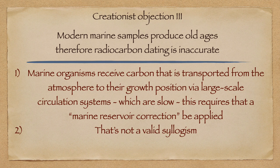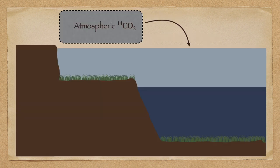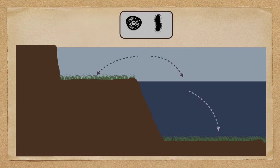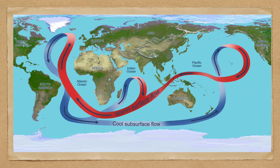The third young Earth creationist objection is that if you take a modern marine organism and date it, it will often produce a spectacularly old age under radiocarbon dating. This is actually a well-known and well-understood phenomenon. For carbon-14 atoms to get from the atmosphere where they were created into an organism being sampled requires that the atoms be absorbed into the ocean, transported to significant depth by diffusion or biological transport, and then transported via ocean circulation currents to the growth position of the organism. The time taken varies by region but may take as much as 2,000 years.